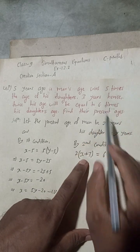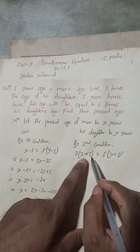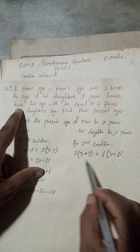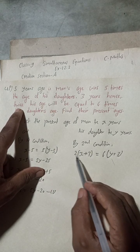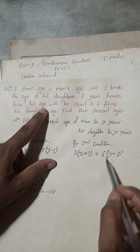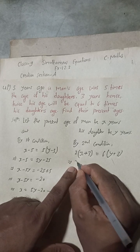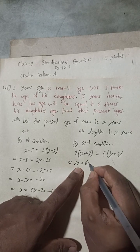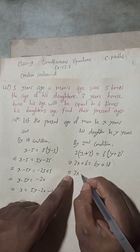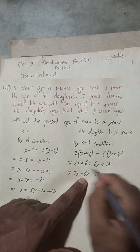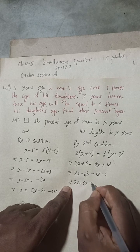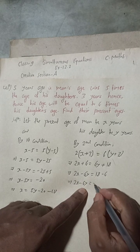This gives us: 2(x + 3) = 6(y + 3), which implies 2x + 6 = 6y + 18. Rearranging, 2x minus 6y = 18 minus 6 = 12. So 2x minus 6y = 12.